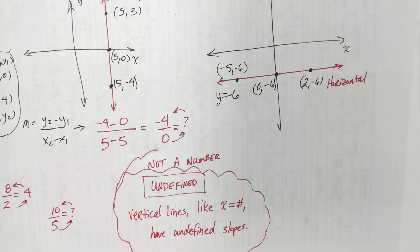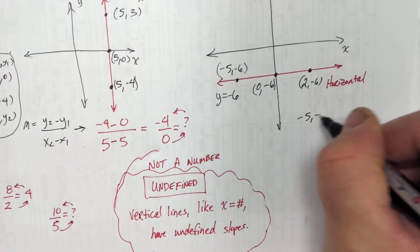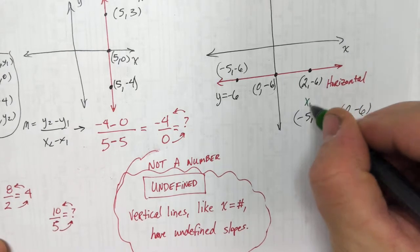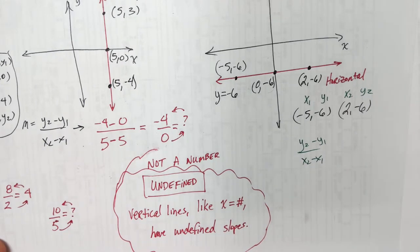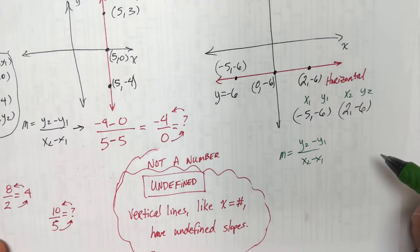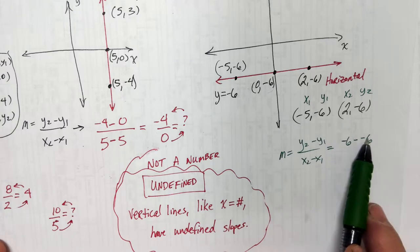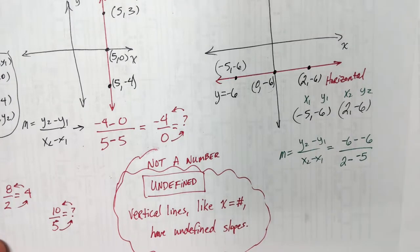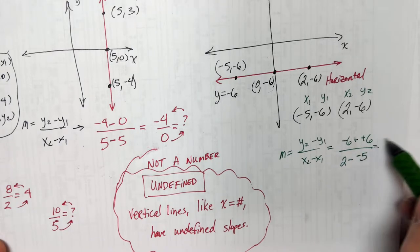When we find the slope on this one, the numerator is going to be zero. Let's use points (negative 5, negative 6) and (2, negative 6). y2 minus y1 over x2 minus x1: negative 6 minus negative 6 over 2 minus negative 5. Minus a negative is plus — negative 6 plus 6 is zero. The denominator is 7.